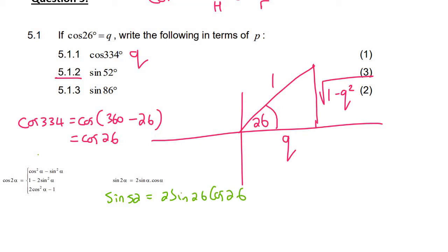So we already know what cos 26 is. We've worked that out in previous questions, but we need to find sin 26. That's easy because we have the triangle. Sin 26, we should know that sin equals opposite over hypotenuse, or y over r, depending on what you prefer. And so that's going to be the square root of 1 minus q squared over 1.